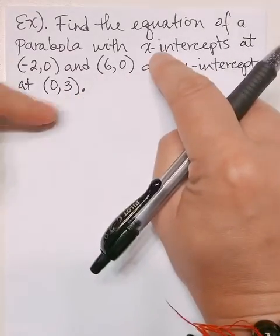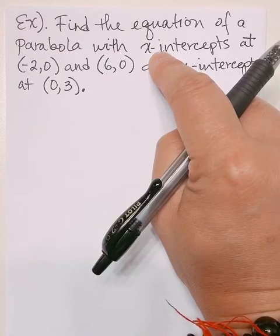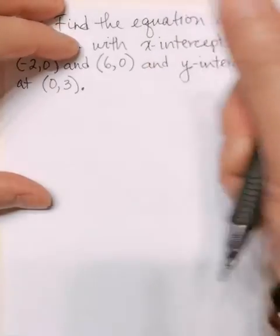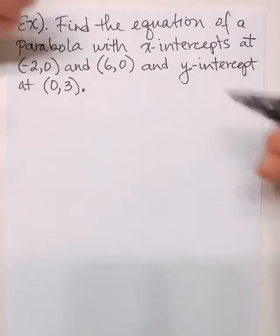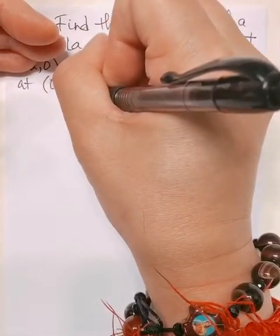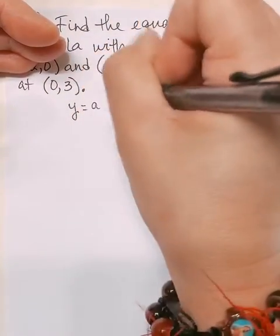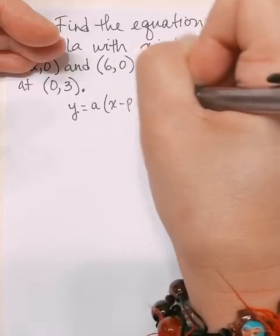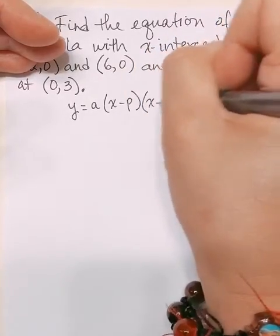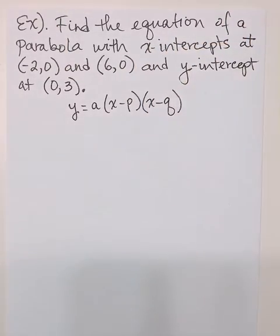Because they give us the x-intercepts, we should start with the intercept form. The intercept form is also known as the factor form. So we have y = a(x - p)(x - q).